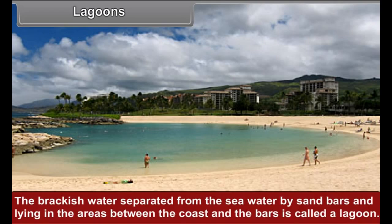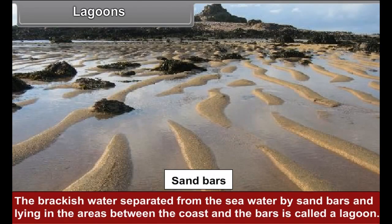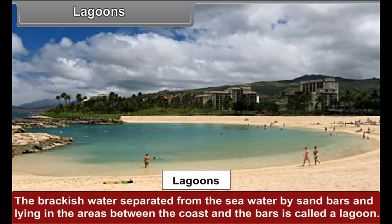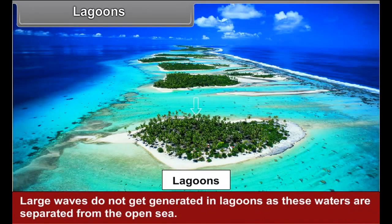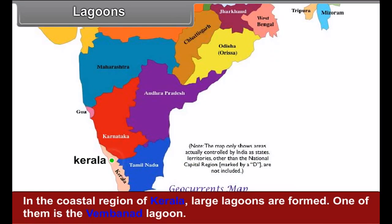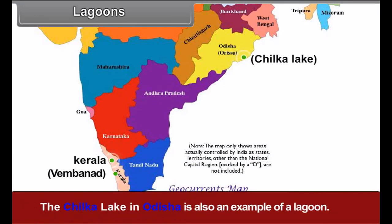Lagoons: The brackish water separated from the seawater by sand bars, lying in the areas between the coast and the bars, is called a lagoon. Large waves do not get generated in lagoons as these waters are separated from the open sea. In the coastal region of Kerala, large lagoons are formed. One of them is the Vembanad Lagoon. The Chilka Lake in Odisha is also an example of a lagoon.